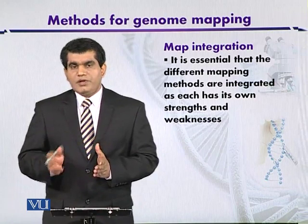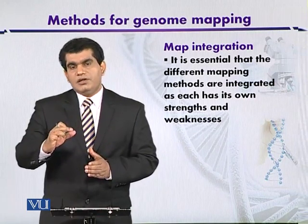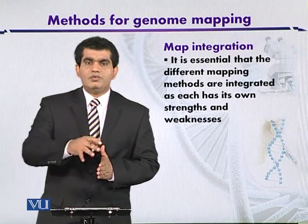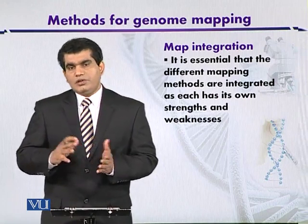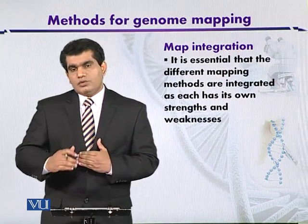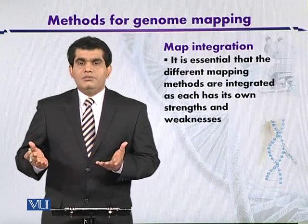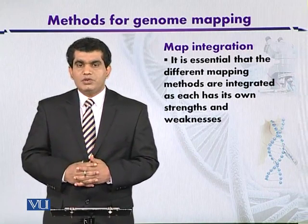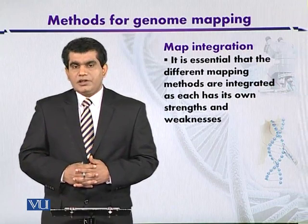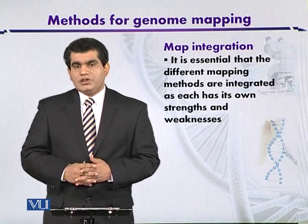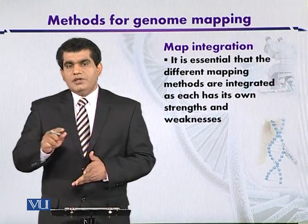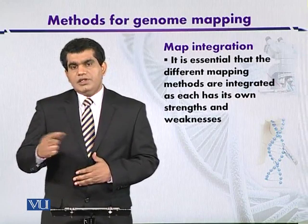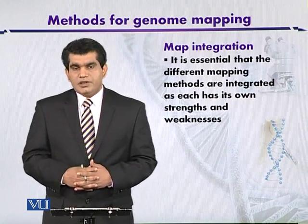Consider a research group which has a DNA sequence, segment, or map, and another group using different techniques — the two maps they develop may be different. For example, one group may designate DNA segments as a, b, c, d while another group identifies them as a, b, e, d. This type of variation may occur between different mapping approaches.